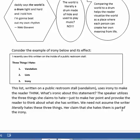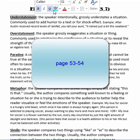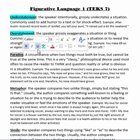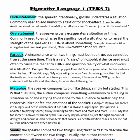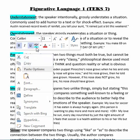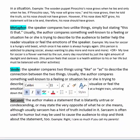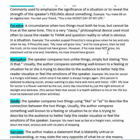Now if you turn to pages 53 and 54 in your reading journal, you're going to find specific examples of figurative language and their definitions. On page 53, we see the type of figurative language and then a definition for each type: understatement, overstatement, paradox, metaphor, simile, and sarcasm. For each type, you also have an example. I'm going to read through one of them to explain how to use this page, but you need to read through the rest on your own.